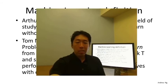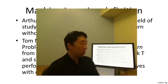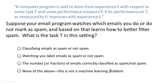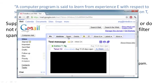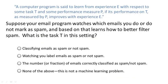Throughout these videos, I'll occasionally ask you a question to make sure you understand the content. Here's one: using Tom Mitchell's definition, let's say your email program watches which emails you do or do not flag as spam. Based on which emails you mark as spam, your email program learns better how to filter spam. What is the task T in this setting? The video will pause so you can select one of four radio buttons.